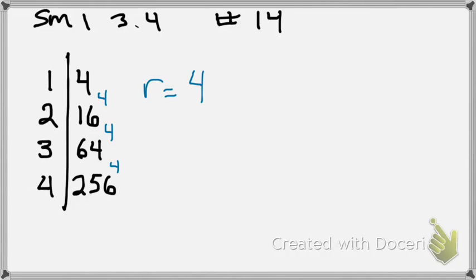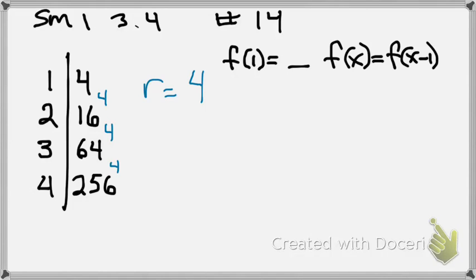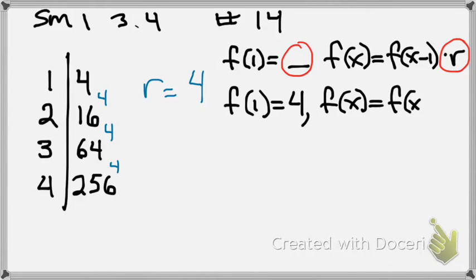Okay. Recursive formula is the same, really close as the other one. So on the recursive, it's going to be F of 1 equals, and then we're going to go F of X equals the number before it, times R. And then, so to complete this, all we have to do is replace R with our common ratio and write down what our first number is. So what is our first number? So F of 1 is 4. So F of X would equal F of X minus 1 times, what's my common ratio? 4. And that's my recursive, my geometric recursive.